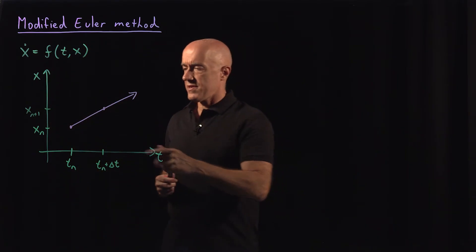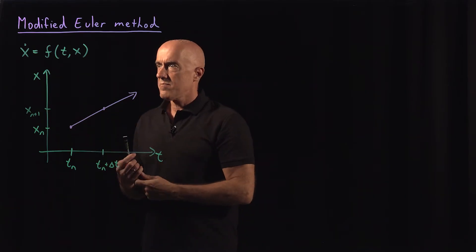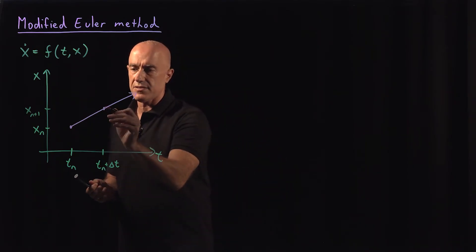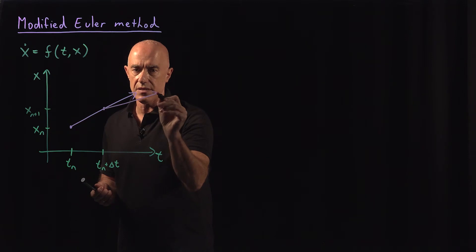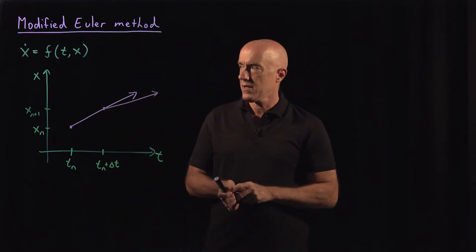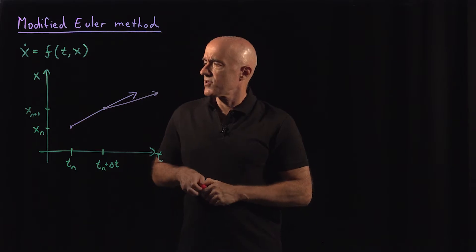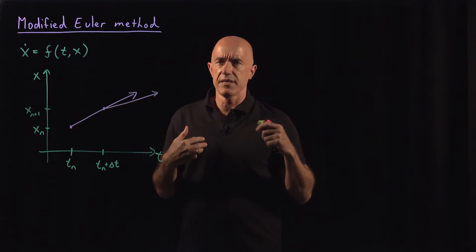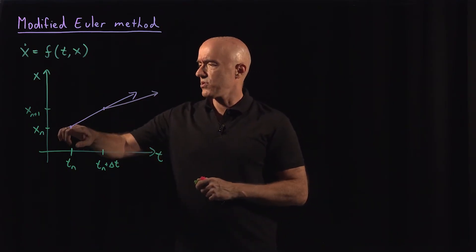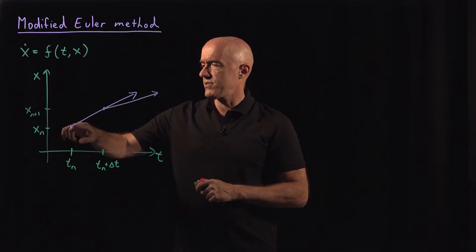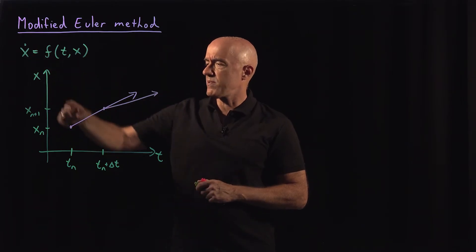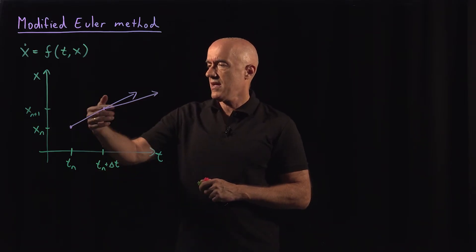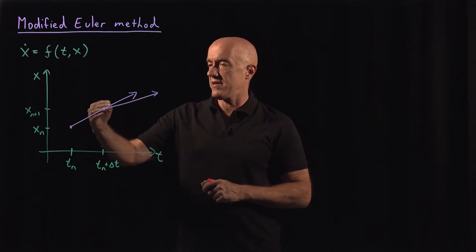The Euler method just uses the slope at t_n. But if we look at the slope of this function at t_n plus delta-t, the slope would have changed. So the accuracy of the Euler method is hindered because we only use the slope at t equals t_n, but the slope is changing everywhere along this line — in particular at t_n plus delta-t, where in the next time step we have a different slope.